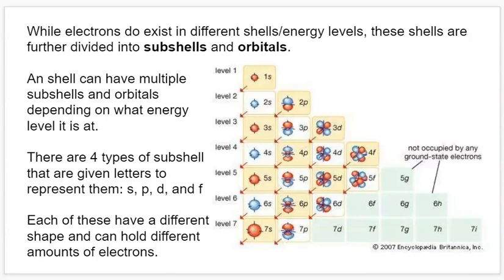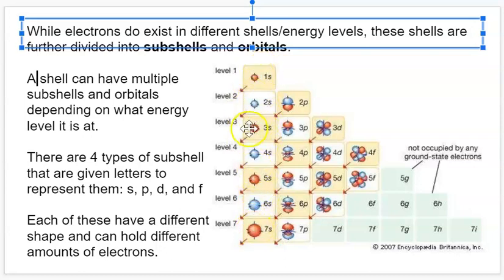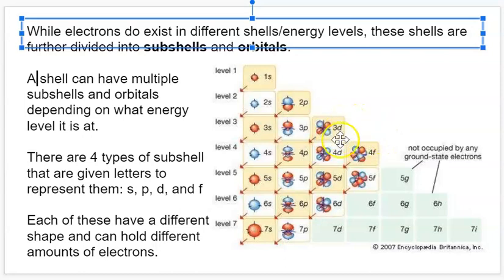A shell can have multiple subshells and orbitals depending on what level it's at. There are four types of subshells proven to exist from the Schrödinger model, and we call them S, P, D, and F subshells. S subshells, which exist at every level, are sort of spheres. P subshells, which start at the second level, are those balloon-shaped ones — like pairs of balloons. D subshells are like sort of clover-shaped — like if you took two pairs of balloons and put them in a clover shape. And F is just a big lump of these things.